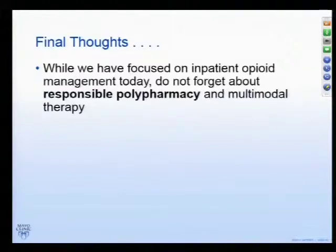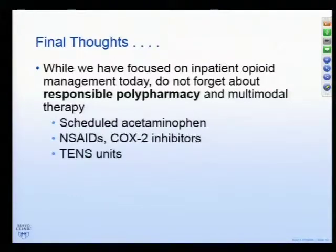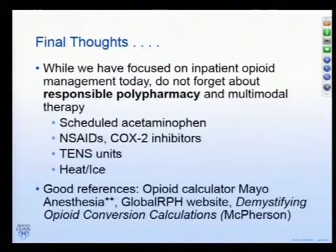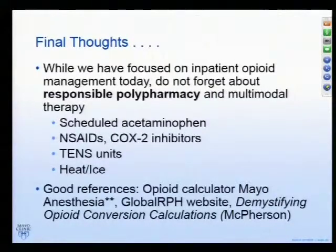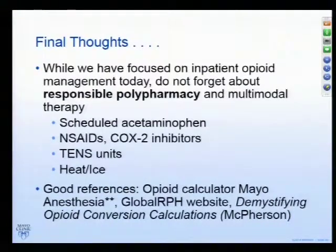Final thoughts: we focused a lot on opioid management, but to do justice to the topic I would promote responsible polypharmacy — things like Tylenol, NSAIDs, COX-2 inhibitors, TENS unit, massage, acupuncture, heat, and ice. If you're interested in this topic, the Mayo anesthesia intranet website has good conversion calculators. GlobalRPH is also a good website. One of my favorite books, which I read in fellowship and continue to recommend, is 'Demystifying Opioid Conversion Calculations' by Lynn McPherson — a pharmacist. Some examples in this talk were similar to things in her book. It's about 130 pages and approximately $25. Thank you.